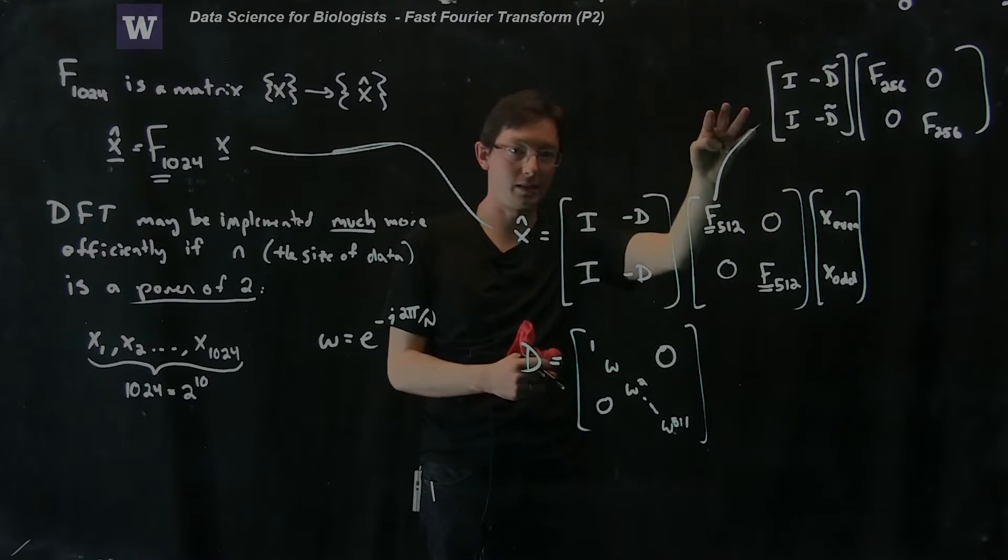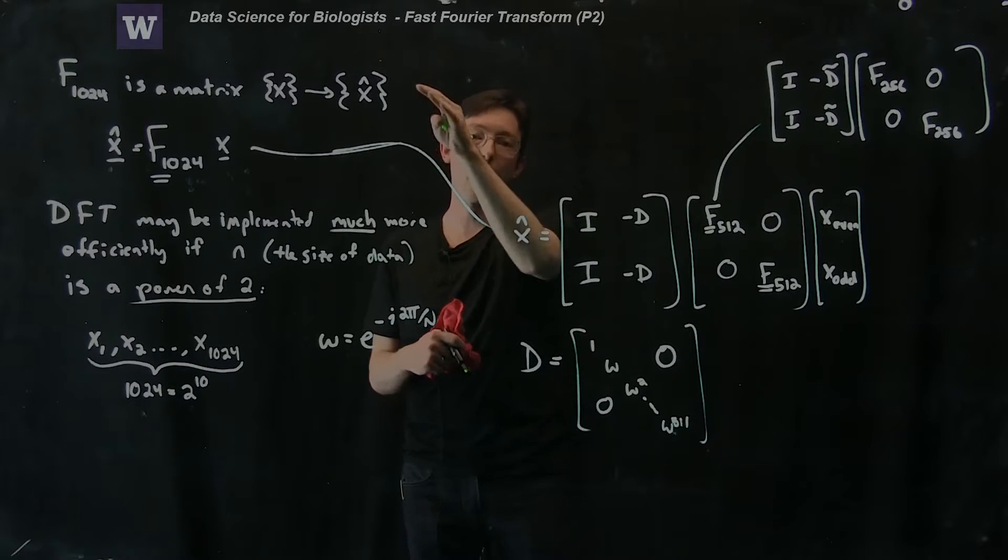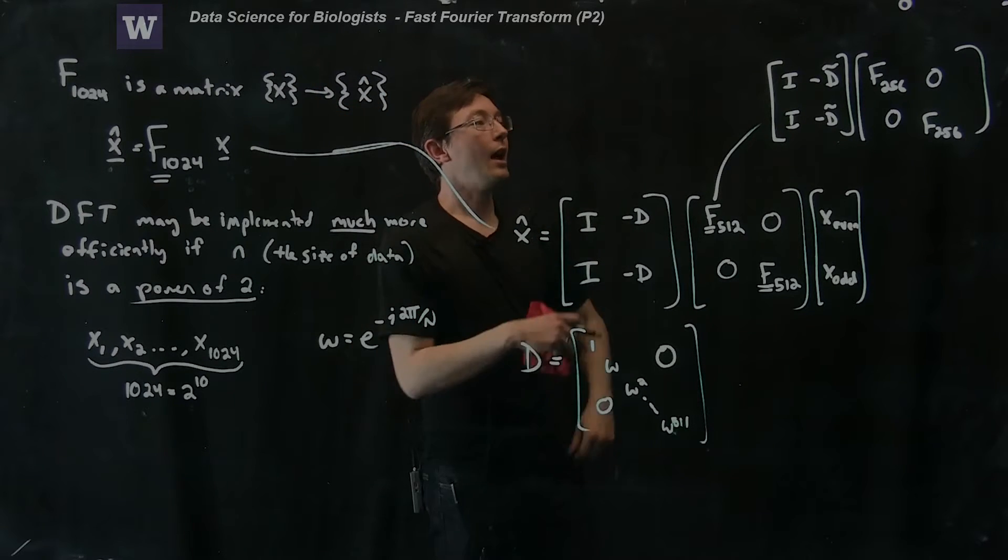And I can break that up into F64, 64, and break that up into 32, 32, 16, 16, 8, 8, 4, 4, 2, 2. And eventually I have a system.